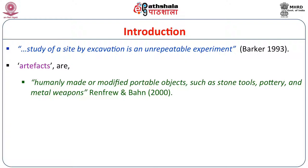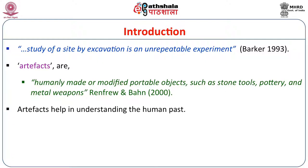What we find here are materials and culture of the past human beings, commonly known as artifacts, which are humanly made or modified portable objects. It may be a stone tool, pottery, metal weapons, or anything. These artifacts actually help in understanding the human past and with these artifacts we tend to understand past culture, past technology, past functions, what kind of trade and contacts existed, and how they utilized the local environment.